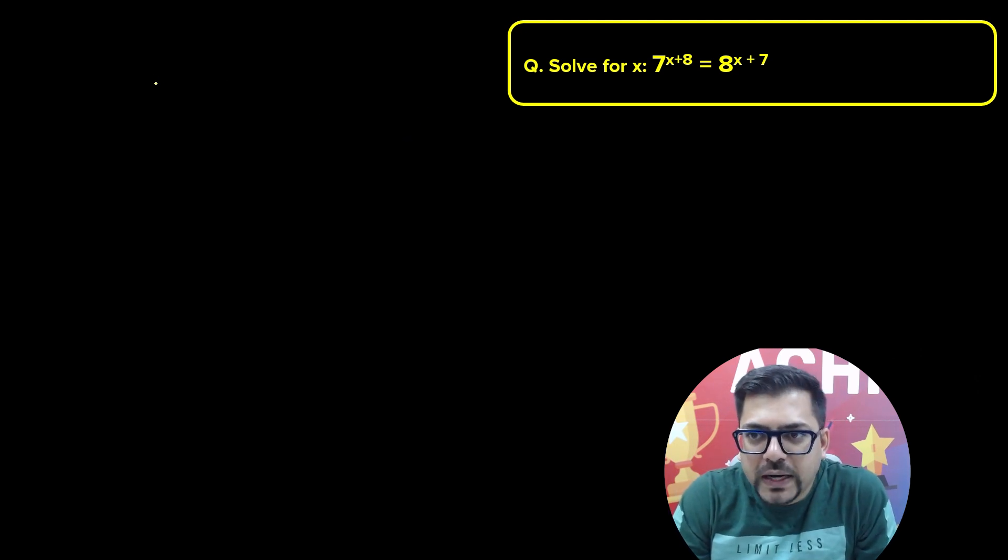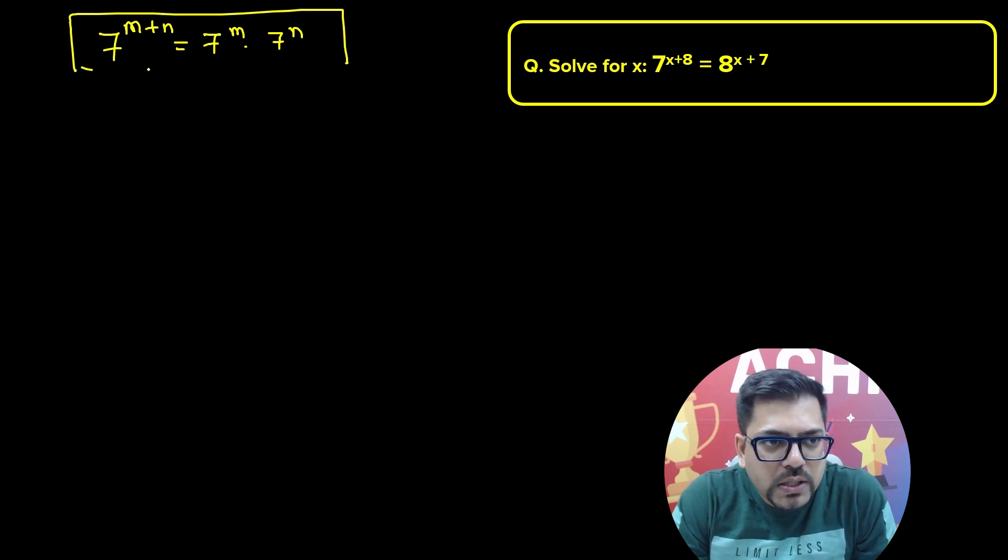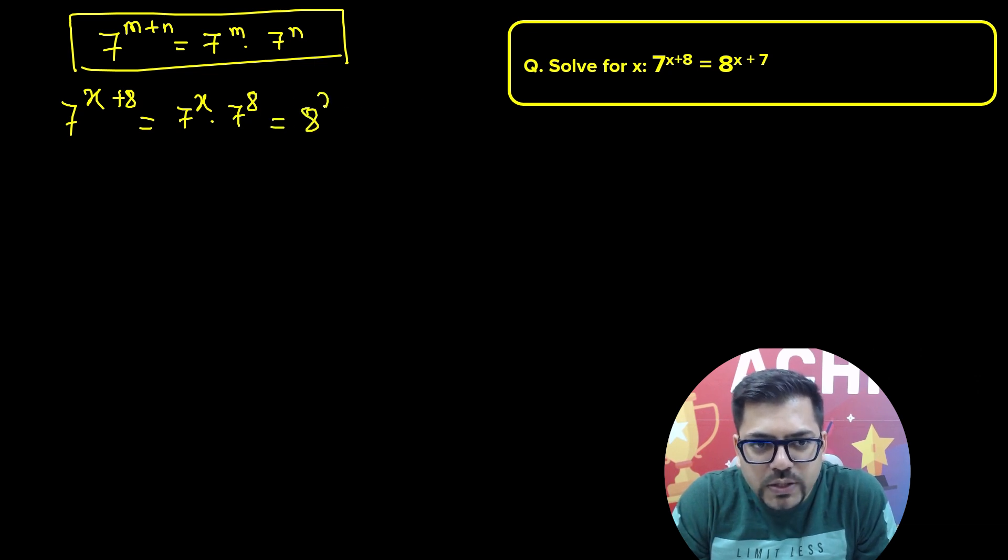You'll apply a formula. For example, if you have 7 raised to power m plus n, it is written as 7 raised to power m into 7 raised to power n. That's the simple exponential formula. So using this, when we have 7 raised to power x plus 8, this can be written as 7 raised to power x into 7 raised to power 8. Similarly, 8 raised to power x plus 7 can be written as 8 raised to power x into 8 raised to power 7.